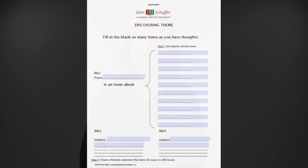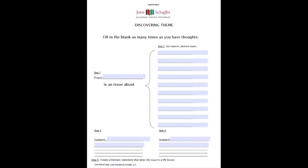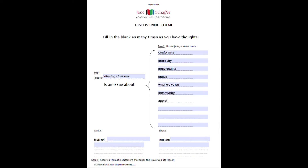Now comes the fun part. What is this issue really about? Let's look at the big picture, using a Discovering Theme graphic organizer to help us. Brainstorm what wearing uniforms is really about — think about life. Wearing uniforms is an issue about conformity, creativity, individuality, status, what we value, community, appreciating each other, peer pressure, school pride, and respect for each other.